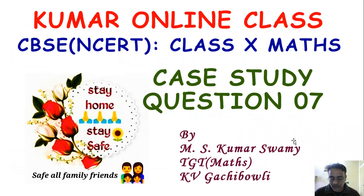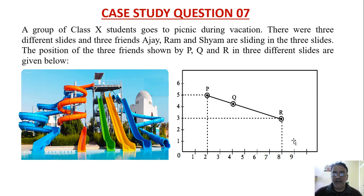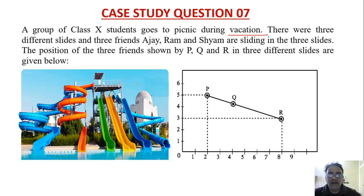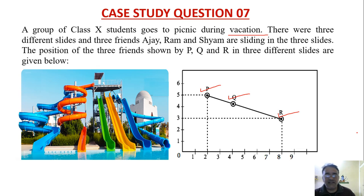So all of you mute your mic. Now we'll start case study question number seven. This question is based on coordinate geometry. A group of Class 10 students goes on a picnic during vacation. There were three different slides — see this figure — and three friends Ajay, Ram, and Syam are sliding on the three slides. The positions of the three friends are shown by P, Q, and R in three different slides as given below. We have to argue the answers by seeing this figure.